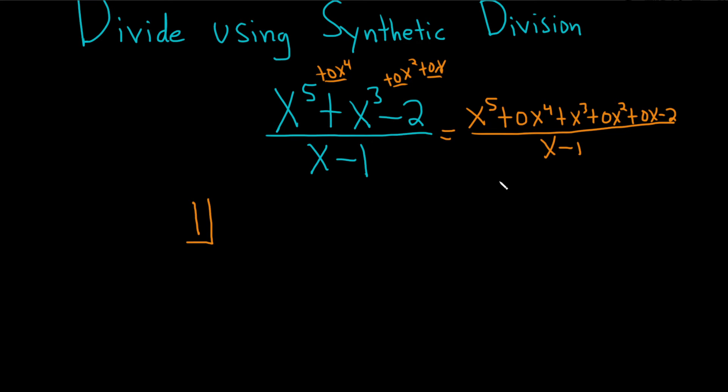So these are the numbers that you're going to want to use. And there's a 1 here, so it's 1, 0, and then there's a 1 here. So 1, and then 0, 0, and then negative 2.